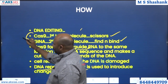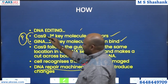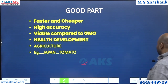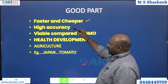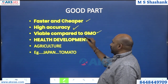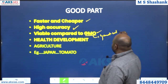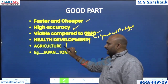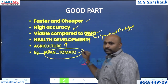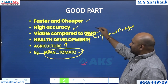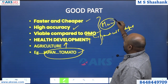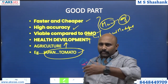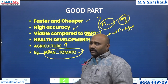So Cas9 and gRNA are the two key molecules very useful for your prelims. Cas9 is an enzyme — a protein which accelerates chemical reactions. What is the good part of CRISPR? It is faster and cheaper, with high accuracy, and it is viable compared to genetically modified crops. There can be huge development in health. This can also be utilized in agriculture practices — for example, Japan is currently using it for tomato. Gene editing can bring a lot of change in agriculture as well as human health services.